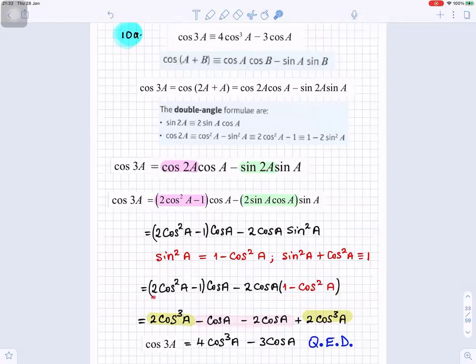So, 2 cos²a times cosa gives you 2 cos³a. Minus 1 times cosa gives you minus cosa. Minus 2 cosa times 1 gives you minus 2 cosa. And minus 2 cosa times minus cos²a, the 2 and the 1 make 3, so it gives you 2 cos³a.